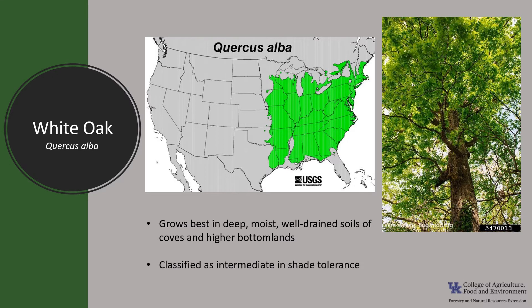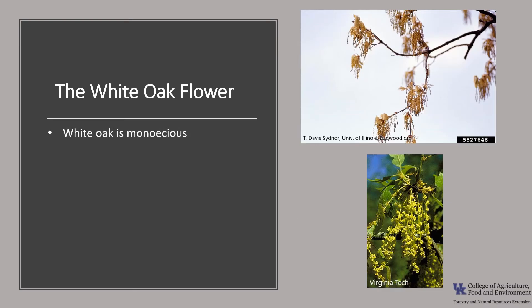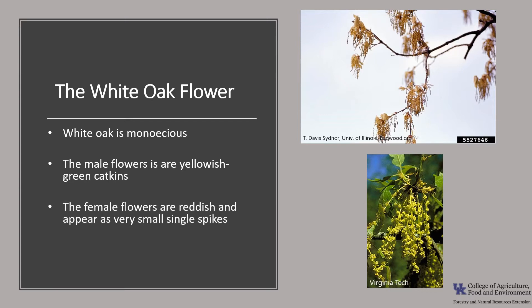White oak is generally classed as intermediate in shade tolerance. It's most tolerant in youth and becomes less tolerant as the tree becomes larger. White oak flowers are monoecious—meaning one house—which means a tree will have both male and female flowers. The male flowers are yellow-green, borne in a drooping slender catkin about two to four inches long. The female flowers are reddish-green and appear as very small single spikes. The flowers emerge with the leaves in mid-spring.